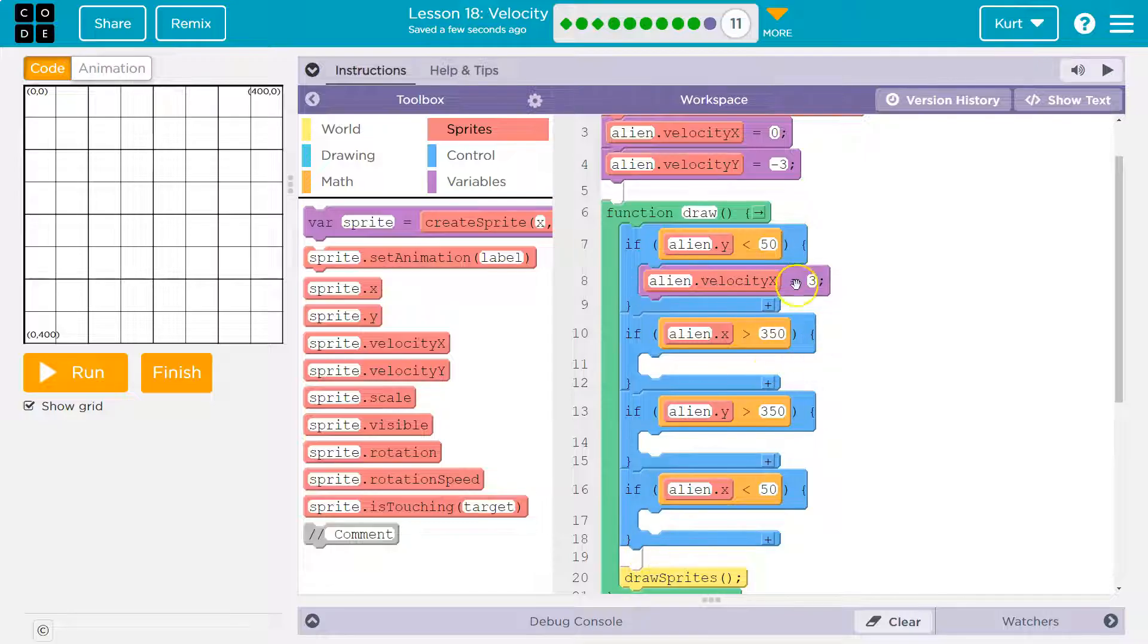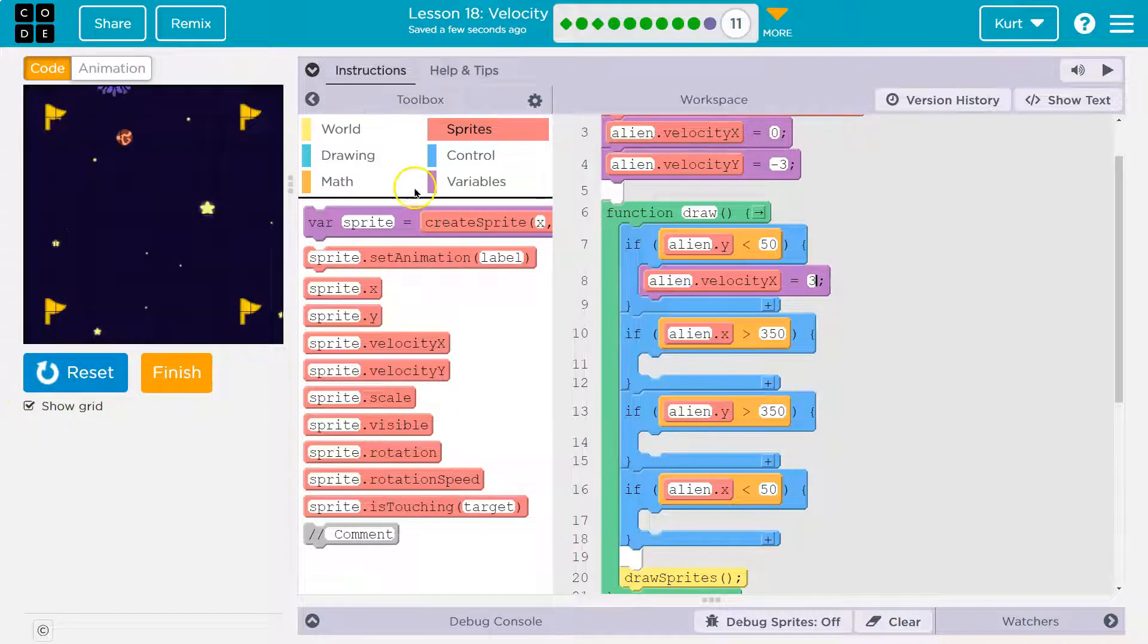And this is just like saying alien dot X equals alien dot X plus three. Every time the draw loop runs, it just sets it though. Every time it runs, it adds three to where the alien's location is. We then update and add three more. It's like a flip book. And it gives us the illusion of movement because every time the alien moves three pixels over, let's see if this part works less than 50. Boom.